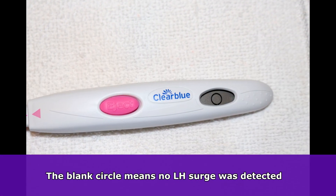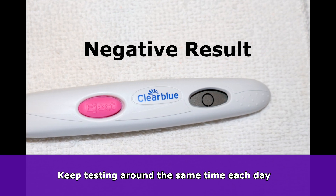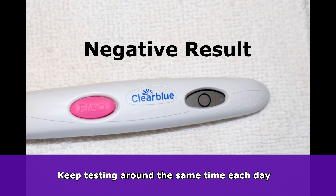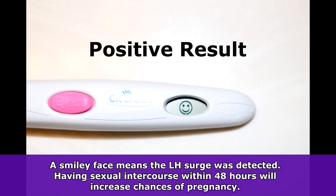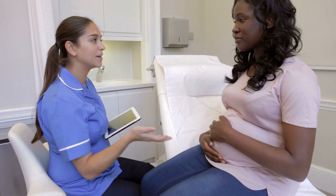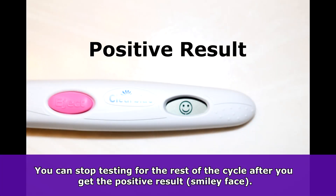If no LH surge is detected, you'll see a blank circle — in that case you should keep testing each day at the same time. If the smiley face appears, it means the LH surge was detected and you should have sexual intercourse within the next 48 hours to increase your odds of pregnancy. Once you get that smiley face, you can stop testing for the rest of your cycle.